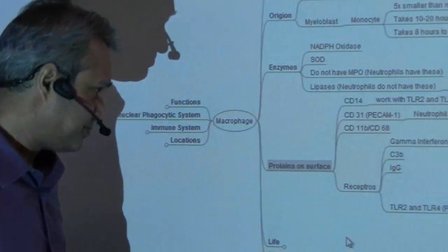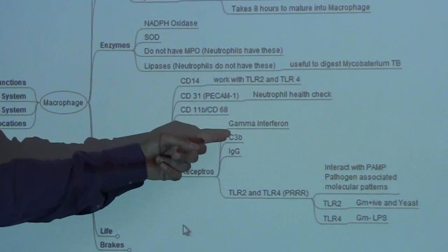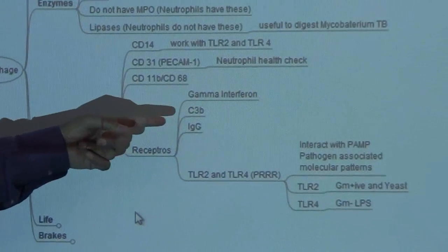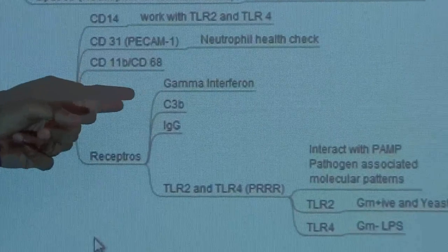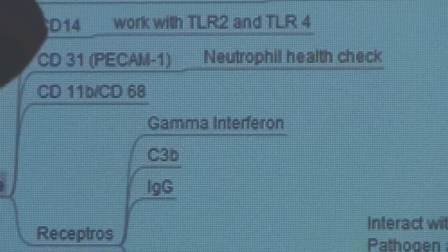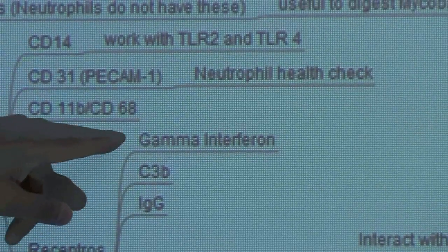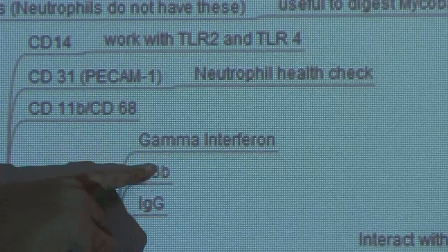Similarly, it has CD11, CD68. It has gamma interferon receptors. Of course, remember we talked about the macrophage secreting IL-12. Then the helper T cells would be secreting gamma interferons. So of course, it has a receptor for that. These two are very important. These are opsonins.